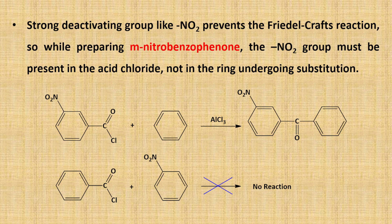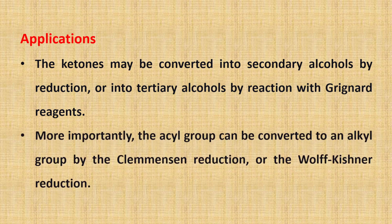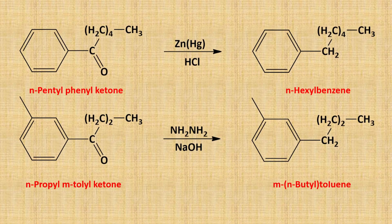Some applications of Friedel-Crafts acylation: the ketone may be converted into a secondary alcohol by reduction, or into a tertiary alcohol by reaction with a Grignard reagent. One of the most important applications is that the acyl group can be converted to an alkyl group by Clemmensen reduction or by Wolff-Kishner reduction. For example, N-pentylphenyl ketone can undergo Clemmensen reduction using zinc amalgam to give N-hexylbenzene. Similarly, Wolff-Kishner reduction can convert N-propyl-m-tolyl ketone in the presence of hydrazine to give meta-N-butyl toluene.